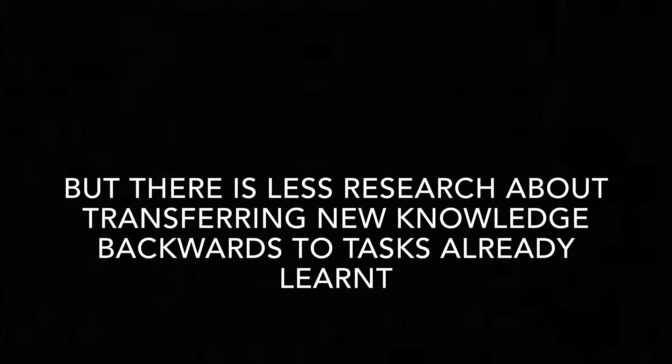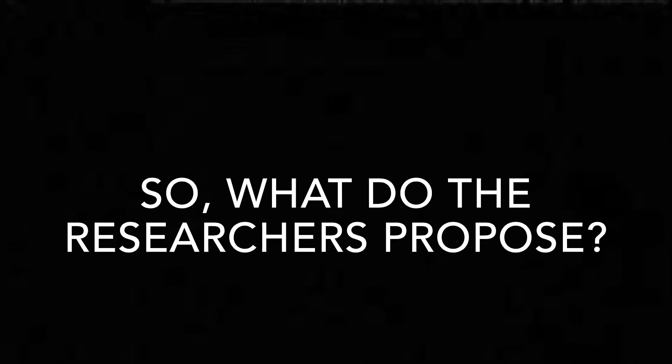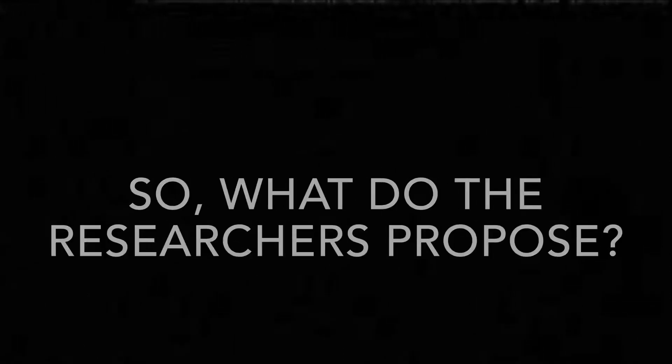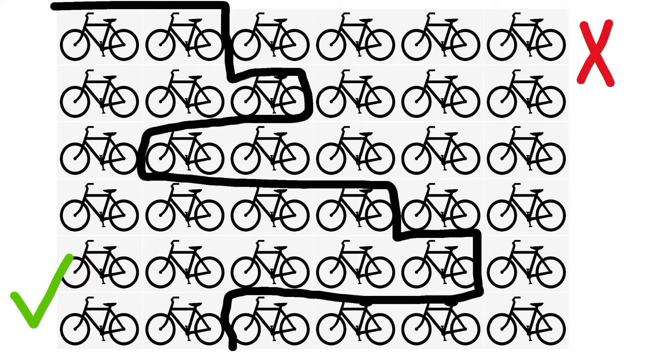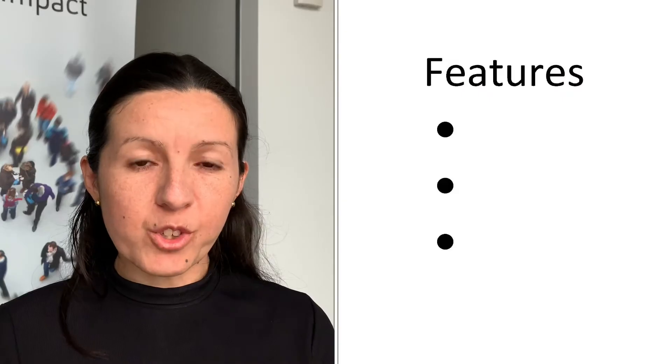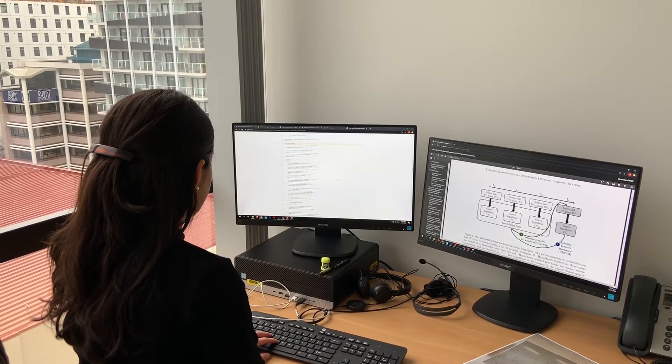Let's say that in our machine learning system we had a first task which was about separating examples of good bike riding from bad bike riding. We had some features to describe that task, and when we trained our model we got some accuracy on that task.